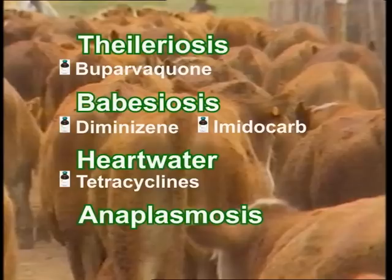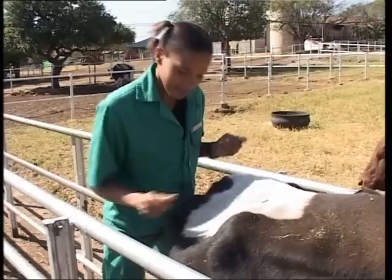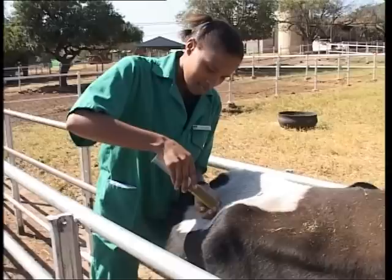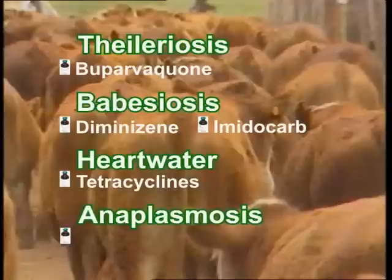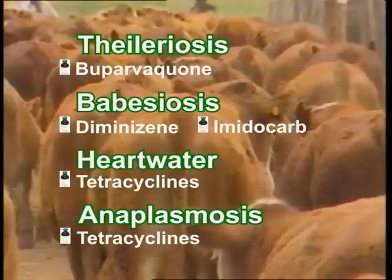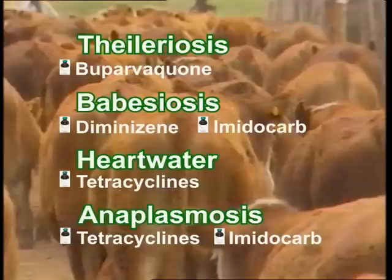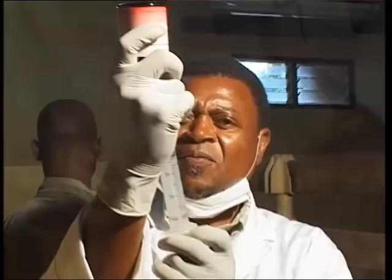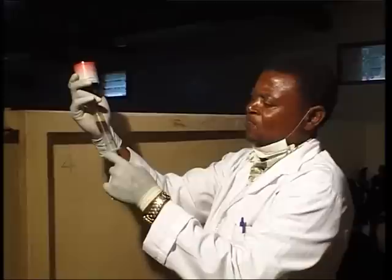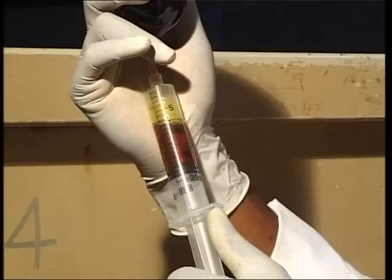Tetracyclines are the most widely used drugs for the treatment of heartwater. Repeated oxytetracycline injections may be used to protect susceptible animals against heartwater when they are introduced into an endemic area, while at the same time allowing them to develop a natural immunity. In many countries, tetracyclines are also the only effective drugs approved for the treatment of anaplasmosis, although imidocarb is also effective at the dosage recommended for the chemoprophylaxis of babesiosis. Specific treatment early in the course of Anaplasma infection is desirable, and such treatment prior to the development of a higher parasitaemia or the onset of severe anaemia is considered essential for a favourable outcome.